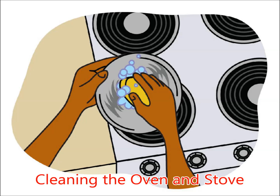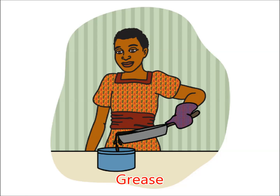Cleaning the oven and stove. Clean any spilled food in the oven and on the stove as soon as they have cooled. Clean your stove daily. Spilled or burned food and grease are dangerous. They smell bad and attract bugs, rats, and mice. Spilled grease can also cause falls and fires. Do not put grease down the sink. Pour it into an empty can and throw it away in the trash.